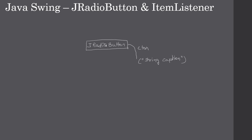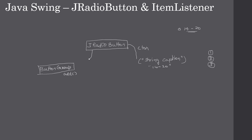We will construct JRadioButton by passing the caption to the constructor — this creates a radio button with whatever string you pass as its caption. For example, if you use an age range like "14 to 20", that string is passed to the constructor. We will create a set of radio buttons — three or four instances, however many you need. After creating those radio buttons we have to add all of them to a ButtonGroup: first we construct the ButtonGroup, then call its add method to add each JRadioButton to it.